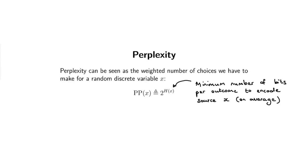Perplexity you can think of as: out of how many things am I choosing? None of that made sense yet — that's fine. We're going to do a quick thought experiment. I'm going to stand in this room and roll a dice. The dice's name is x. We'll start with maybe two sides, then go to one side, then maybe four sides.